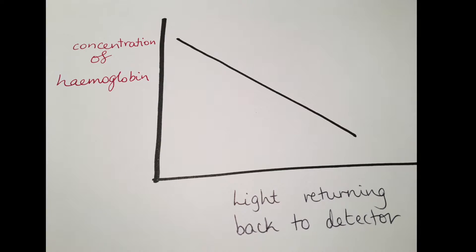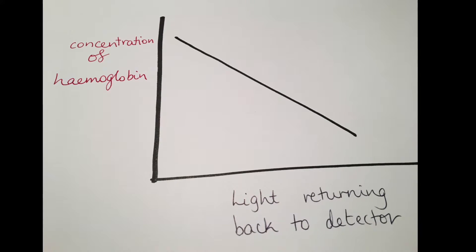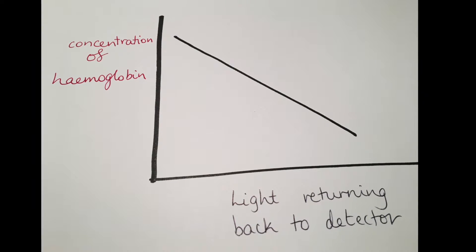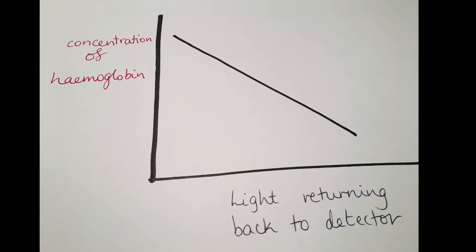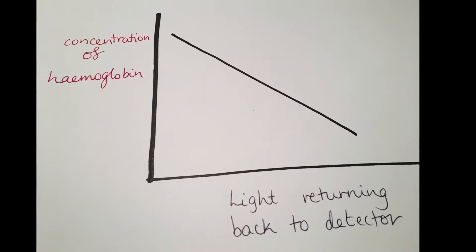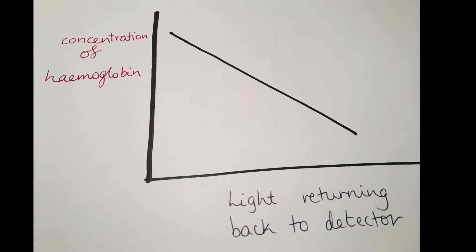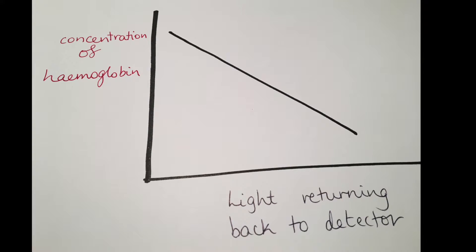So if there was less light returning to the detector than expected, it means there was more absorption of the light, which indicates a higher than normal haemoglobin concentration, which in turn indicates the patient has breast cancer.